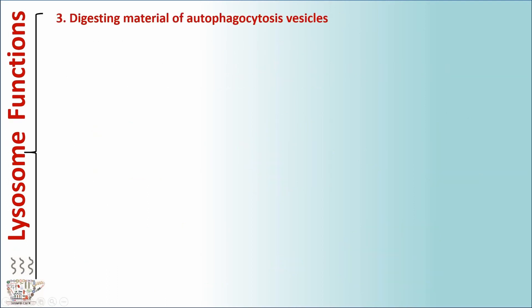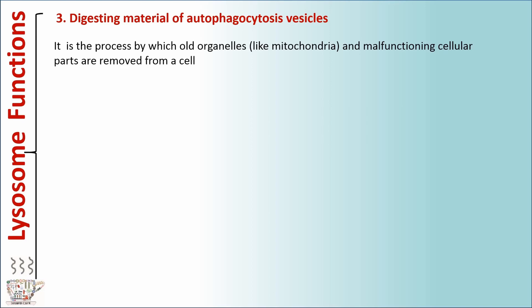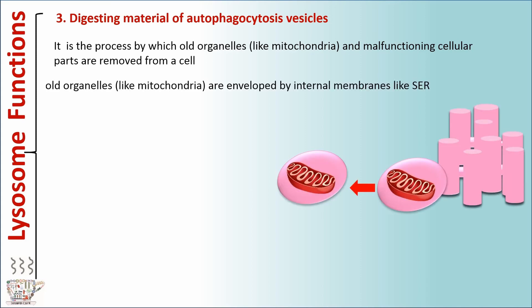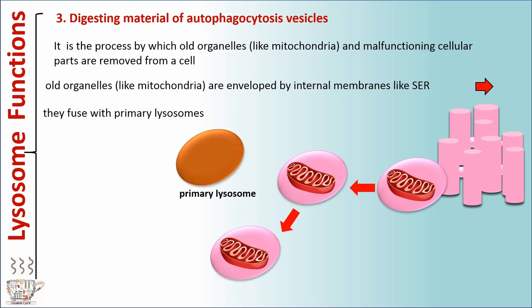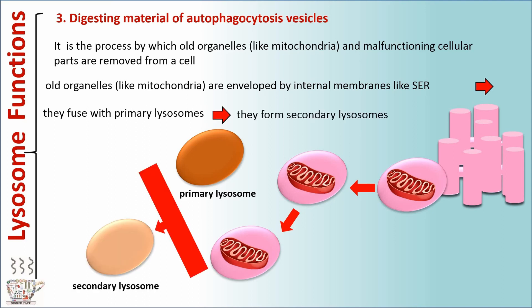The third function of lysosomes is digesting material from autophagocytosis vesicles. It is the process by which old organelles, like mitochondria, and malfunctioning cellular parts are removed from a cell. At first, old organelles like mitochondria are enveloped by internal membranes, like the smooth endoplasmic reticulum. Then they fuse with primary lysosomes, forming secondary lysosomes. Finally, the old organelles are digested.